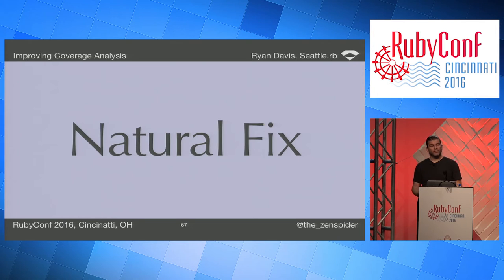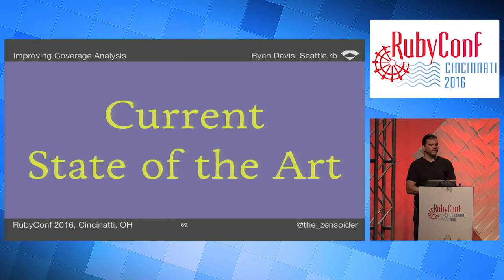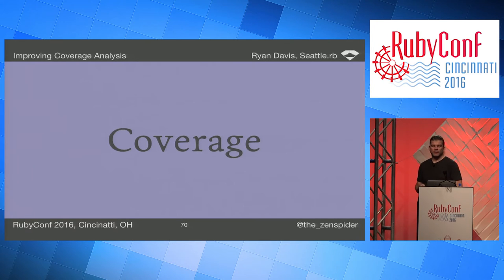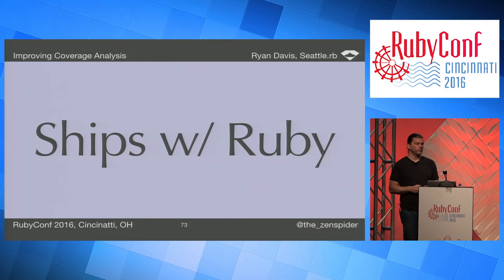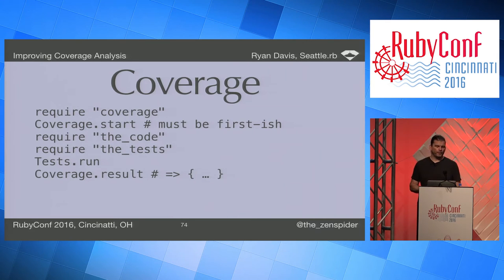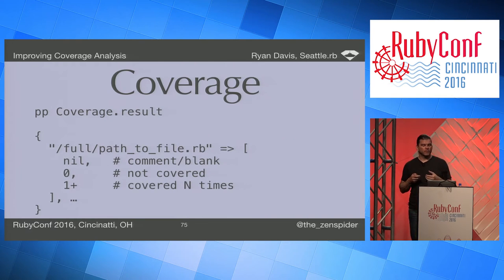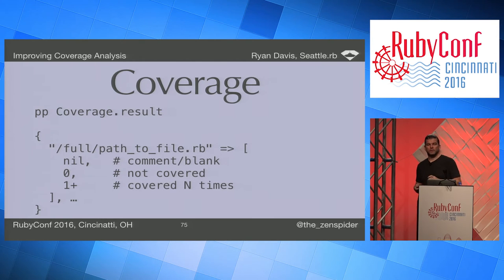TDD is a natural fix via a simple process with many other benefits — so you should do it. As for Ruby's state of the art: `coverage` is a standard tool that ships with Ruby — not a gem — so almost nobody knows about it. It's fairly easy to use: require it, tell it to start as early as possible, load and run your code, then grab the result. The result is a hash mapping the file path to an array of nils and ints — nils are non-code lines, zero is a line you haven't covered.